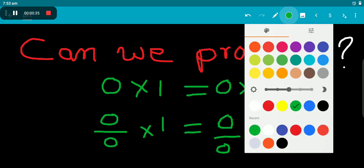Now we know that if two numbers are the same, then we can cancel it out. 0 by 0 we can cancel and write 1 here. 0 into 0 we can cancel out and write 1 there.